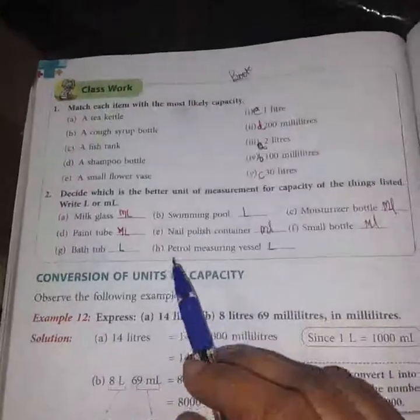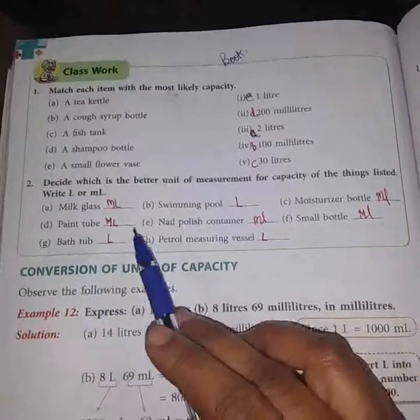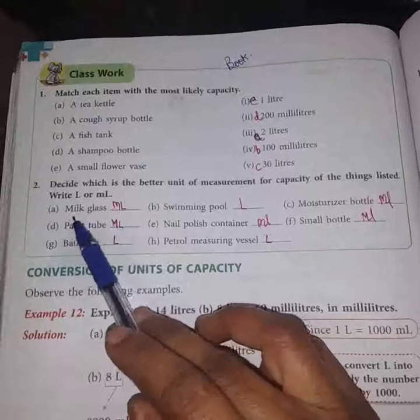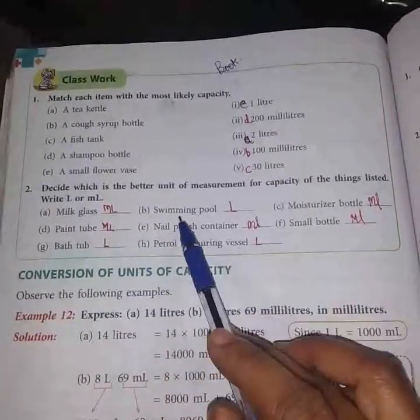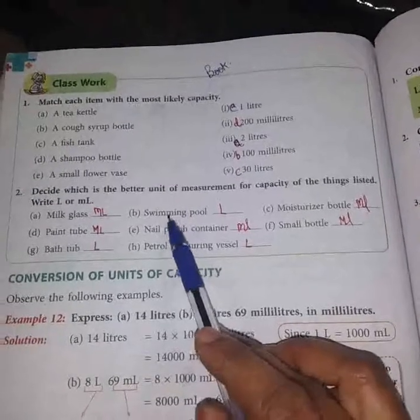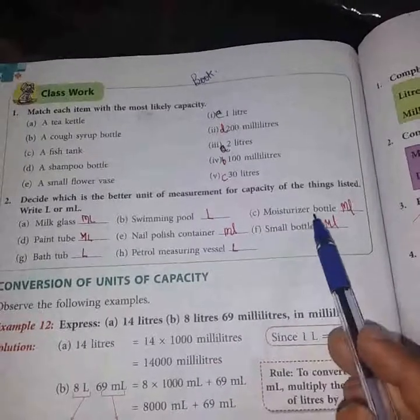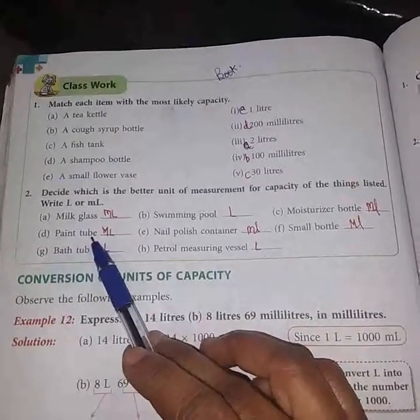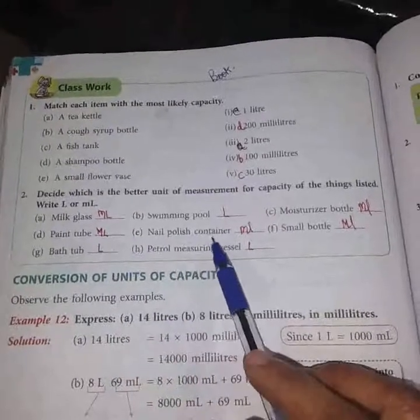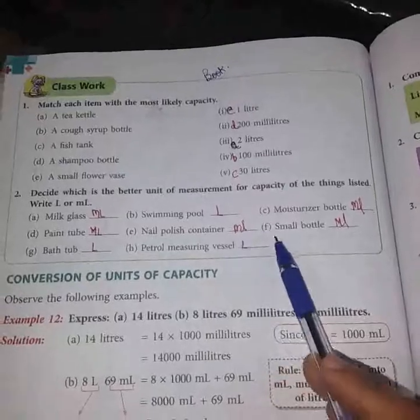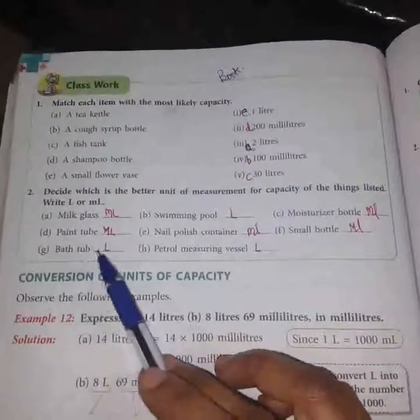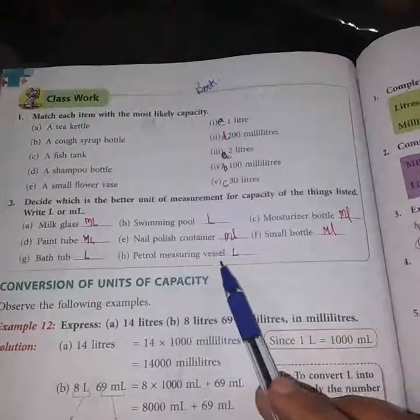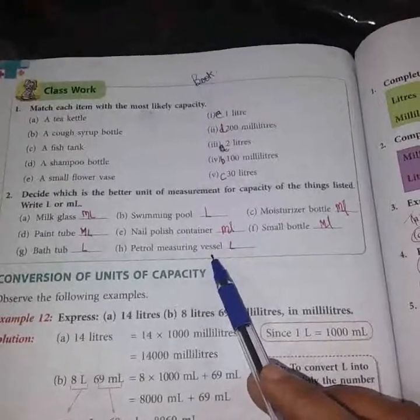Next, some items are given here and we have to mention whether the measurement will be done in liters or milliliters. Here it is given milk glass, so a glass of milk is always measured in ml. Swimming pool, it is a large area so we will measure in liters. Moisturizer bottle will be measured in ml. Paint tube, the color tubes which are available at home, that is measured in ml. Nail polish container measured in ml. Small bottle measured in ml. Then bath tub, it's very big, its capacity will be measured in liters. Then petrol measuring vessel, petrol, that is also measured in liters.